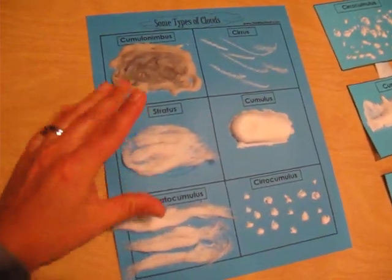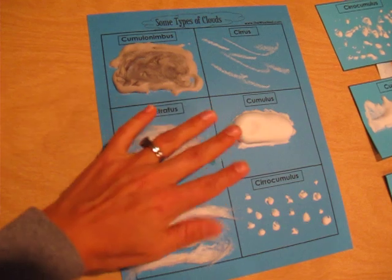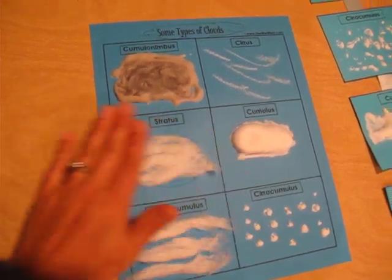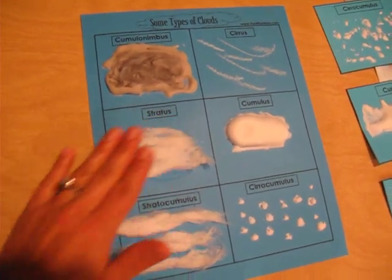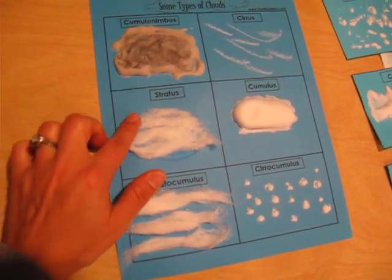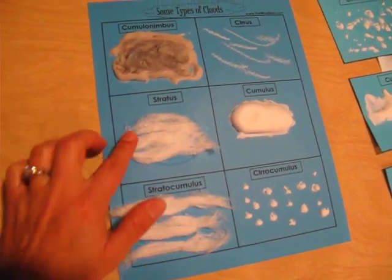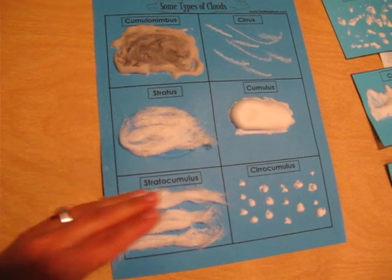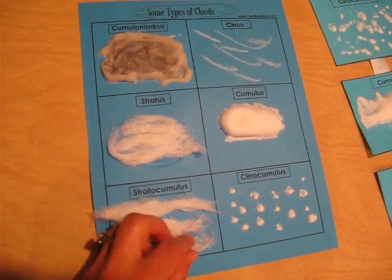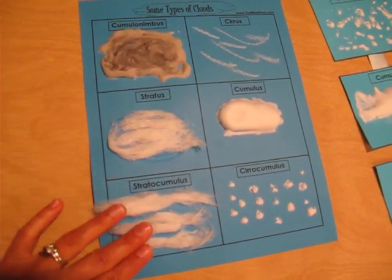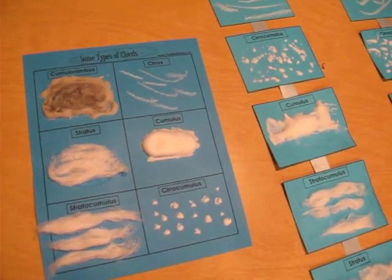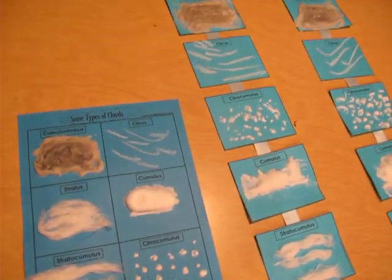For the stratus clouds, we used cotton and just spread it out thin to represent how stratus clouds cover the sky. For the stratocumulus, we used cotton too, but we made little lines to represent the patterns stratocumulus clouds make in the sky.